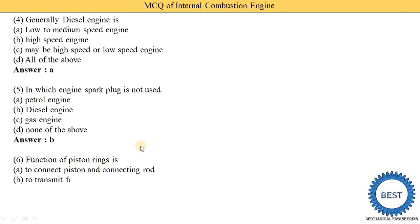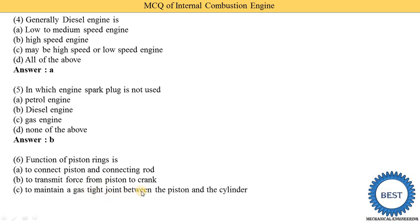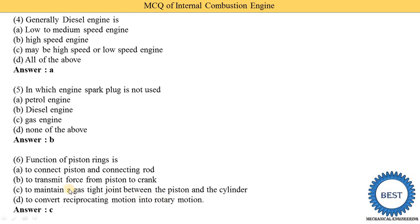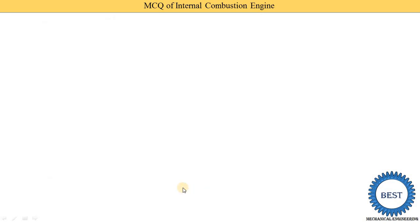Next MCQ: the function of a piston ring is — option A: to connect the piston and connecting rod, option B: to transmit force from piston to crank, option C: to maintain a gas-tight joint between the piston and cylinder, option D: to convert reciprocating motion into rotary motion. Option C is the correct answer — the function of the piston ring is to maintain the gas-tight joint between the piston and the cylinder.